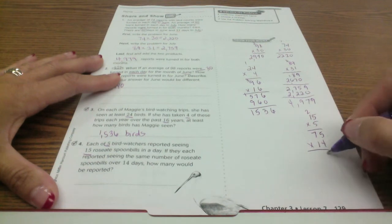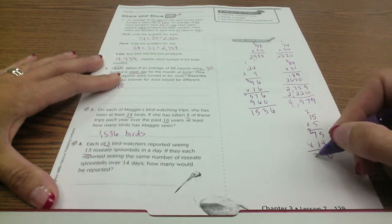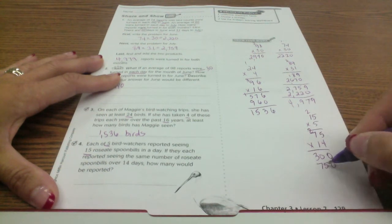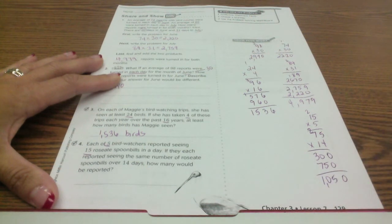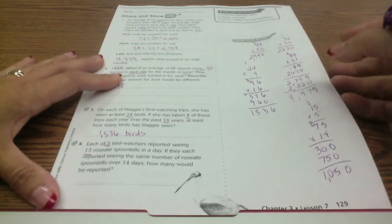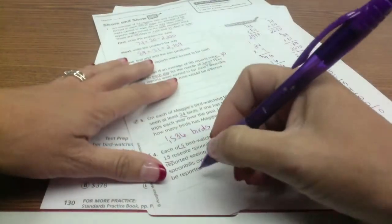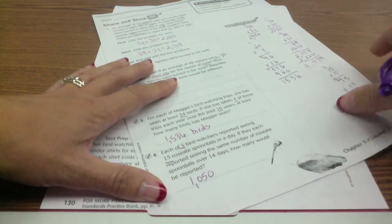4 times 5 is 20, 4 times 7 is 28 plus 2 more is 30, and 10 times 75 is 750, which is 1050. So 1050 spoonbill birds.